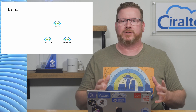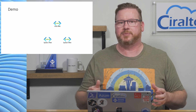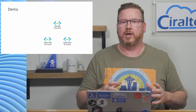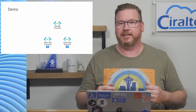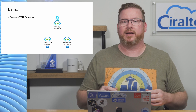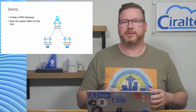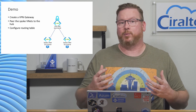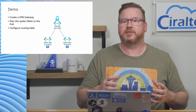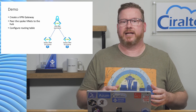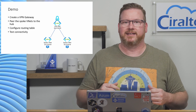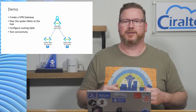In the example coming up, we have three virtual networks: hub, spoke one, and spoke two. The spoke virtual networks each have one subnet and one computer attached. We're going to add a gateway to the hub network, peer the spoke virtual networks with the hub, configure routing tables to forward inter-spoke traffic to the virtual network gateway, and finally verify connectivity. Let's get started in the Azure portal.